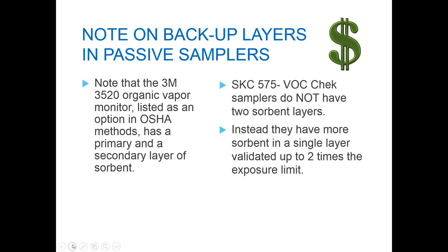Note also that the 3M 3520 passive samplers have both a primary and a secondary layer of sorbent — modeled after a charcoal tube. The SKC 575 series samplers, by contrast, do not have two sorbent layers. Instead they have more sorbent in a single layer — more than even the combined front and back of the 3520. The single layer is a better option because it reduces the cost of analysis — the lab only has to analyze one layer. Also note that the secondary layer in a passive sampler doesn't function like a backup layer indicating breakthrough, as there's no pump pulling vapors to it.